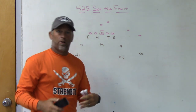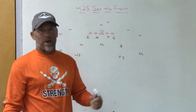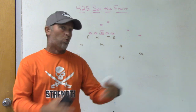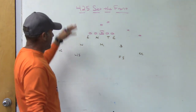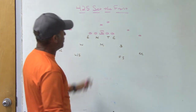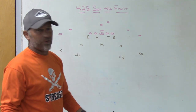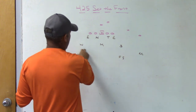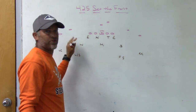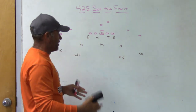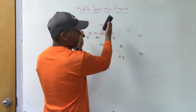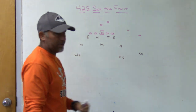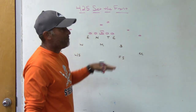When setting the front as a 4-2-5 team there are lots of ways to do it — none of them right or wrong. It can be based on formation, personnel, field/boundary, or coverage. Generically speaking, in a two-by-two set most people will set the three technique to the side of the back. In a two-high structure with balanced formations, there will be an open B gap, and the player falling into that B gap also has pass coverage responsibilities, creating some conflict.